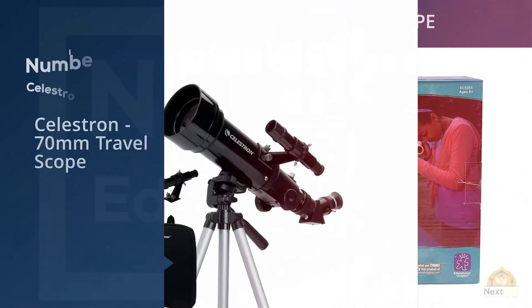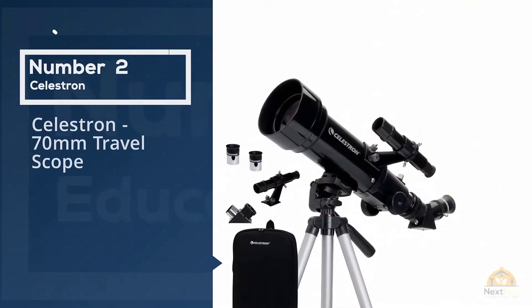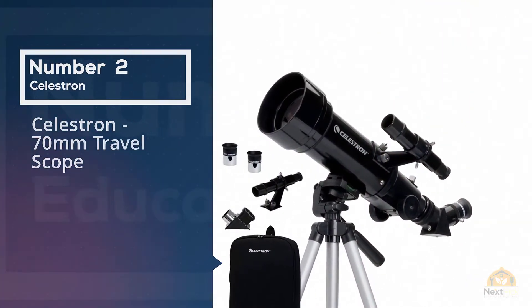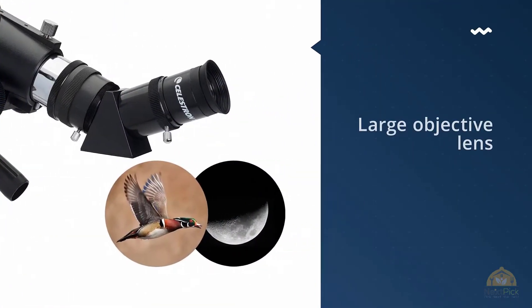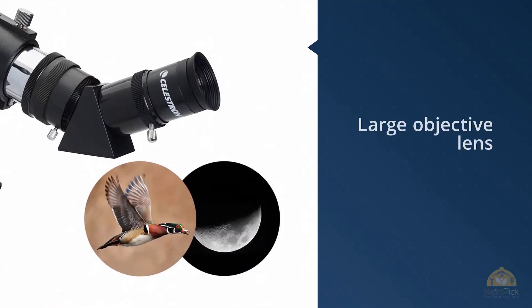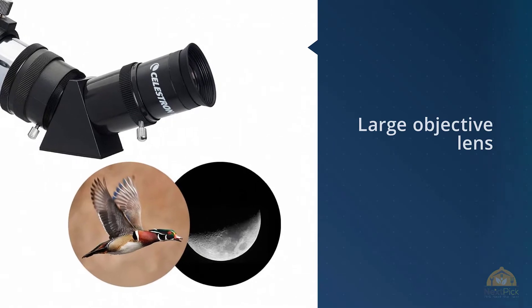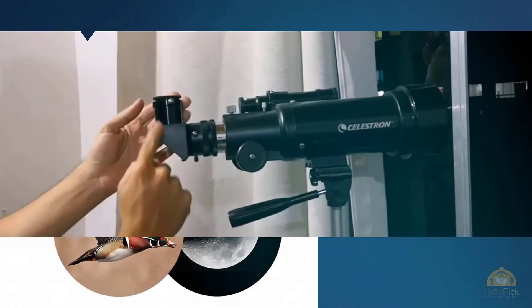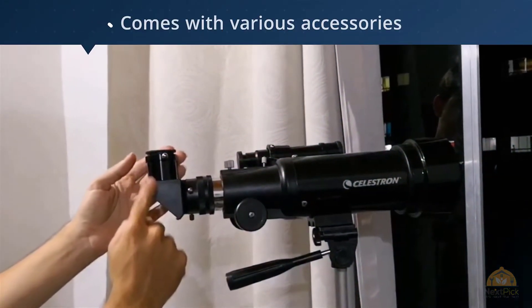Number two: Celestron 70 millimeter travel scope. The first product on our list is the Celestron portable refractor telescope. This telescope comes with two eyepieces, 10 millimeters and 20 millimeters. The purpose of including a low power eyepiece and a high power eyepiece is to give you variation as per your needs and the circumstances you are in.